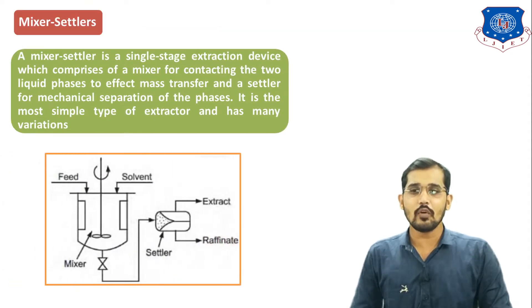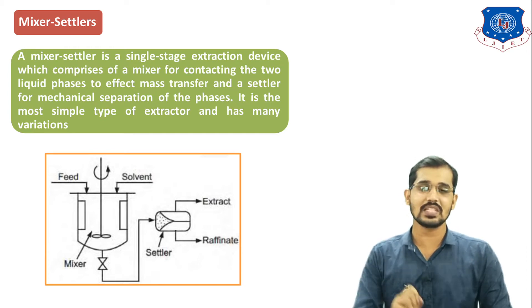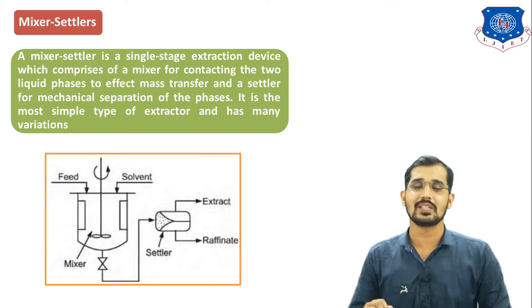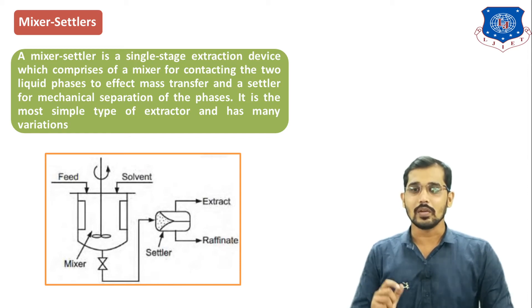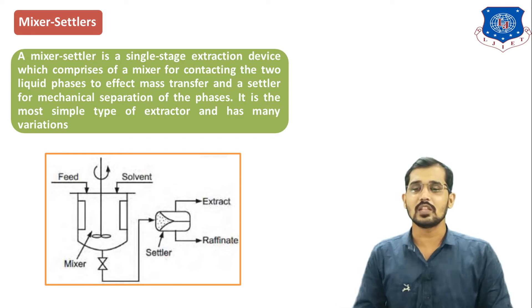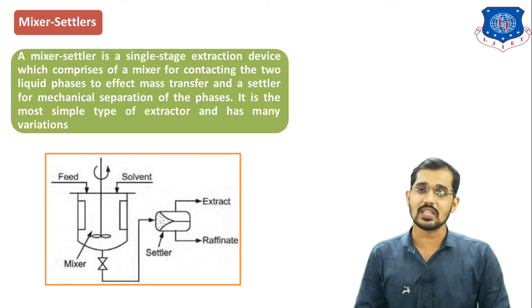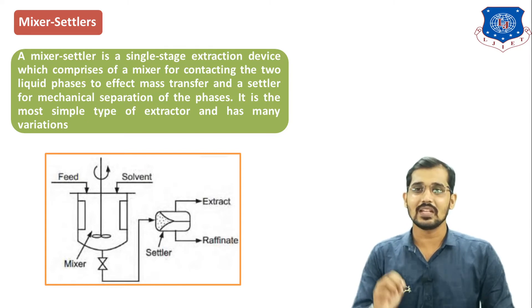Now we will see the Mixer-Settler in detail. You can see on the screen the figure for Mixer-Settler, where we have two units: the first one is the Mixer and the second one is the Settler. A Mixer-Settler is a Single-Stage Extractor device which comprises a Mixer for contacting two liquid phases to effect mass transfer, and a Settler for mechanical separation. Whatever mixing takes place in the Mixer generates two phases — the Extract phase and the Raffinate phase — and these two phases are separated in the Settler.